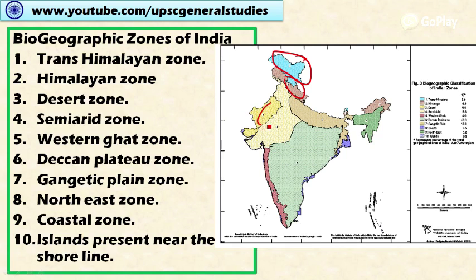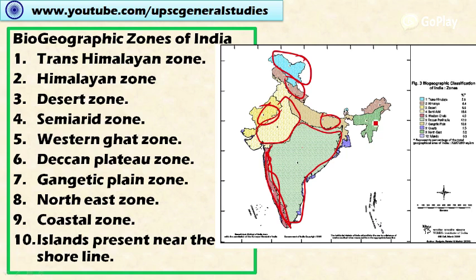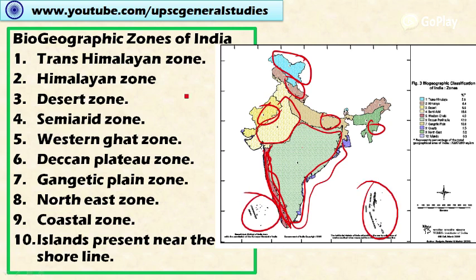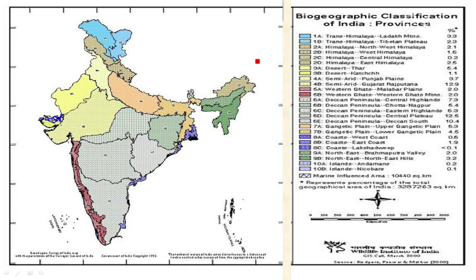The ten biogeographical zones of India are: (1) Trans-Himalayas, (2) Himalayan zone, (3) Desert zone, (4) Semi-arid zone, (5) Western Ghats, (6) Deccan Plateau — which is the largest zone, (7) Gangetic Plains, (8) Northeastern zone, (9) Coastal zone — including all coastal areas, and (10) Islands — including the Andaman and Nicobar Islands and Lakshadweep.